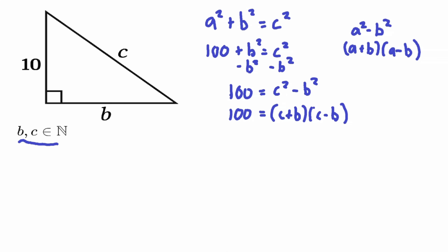These two factor terms must be integers, so there are only a limited number of possibilities. We need to find all factor pairs of 100: 10 × 10, 20 × 5, 25 × 4, 50 × 2, and 100 × 1. We can check each pair by setting (c + b) and (c − b) equal to those factors.